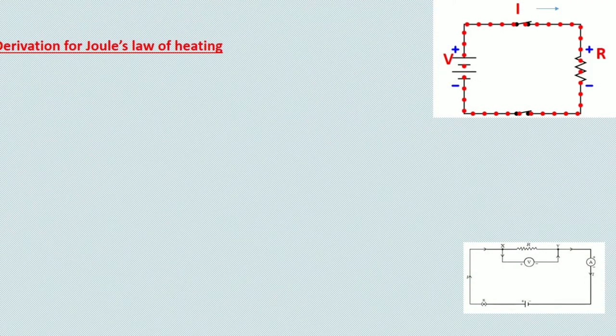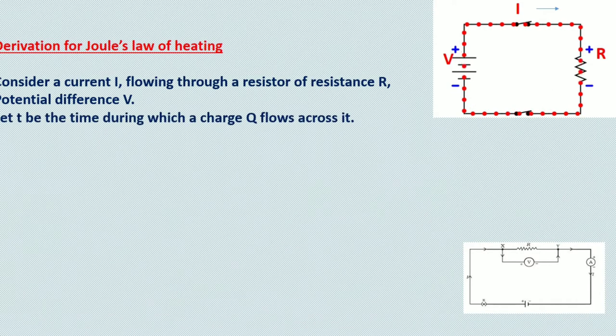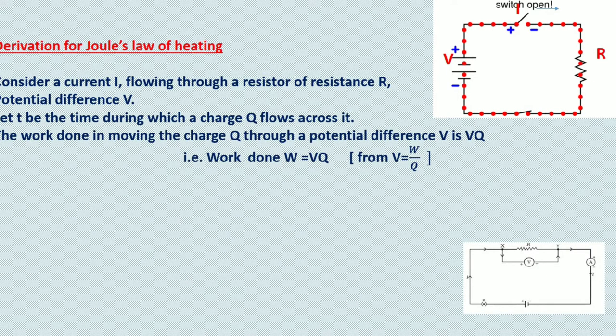Let's discuss the derivation for Joule's law of heating. Consider a current I flowing through a resistor of resistance R, potential difference V. Let t be the time during which a charge Q flows across it. The work done in moving the charge Q through a potential difference V is equal to VQ, from the equation V = W/Q.